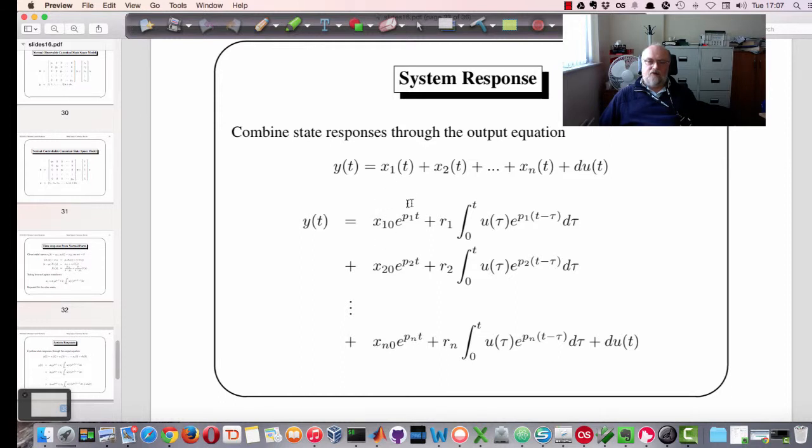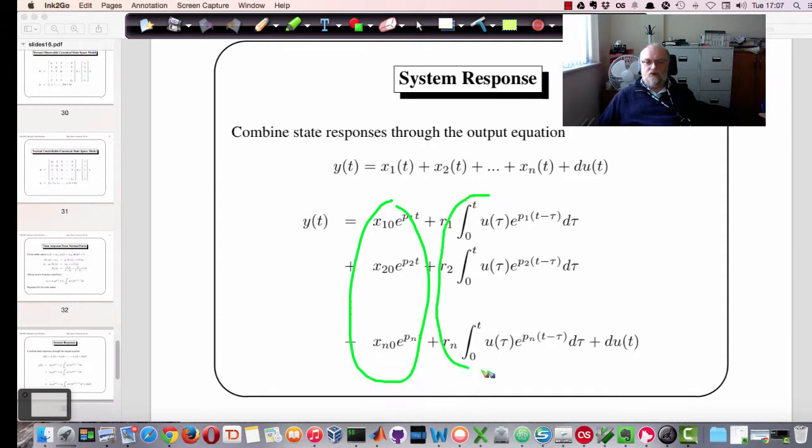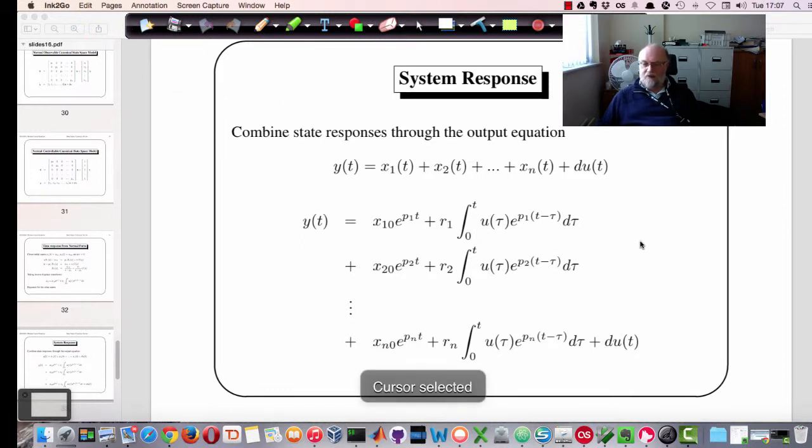And we end up with this structure here. So these are all the initial conditions. These are the convolutions due to the input. And this is the direct connection from input to output. But it's very easy to actually compute the response. Much easier than the method I showed in the lecture last week where we did it by doing the transfer function and inverting that. So that's a useful result and we'll exploit that in a later lecture when we look at computing system responses directly from the state space model itself.